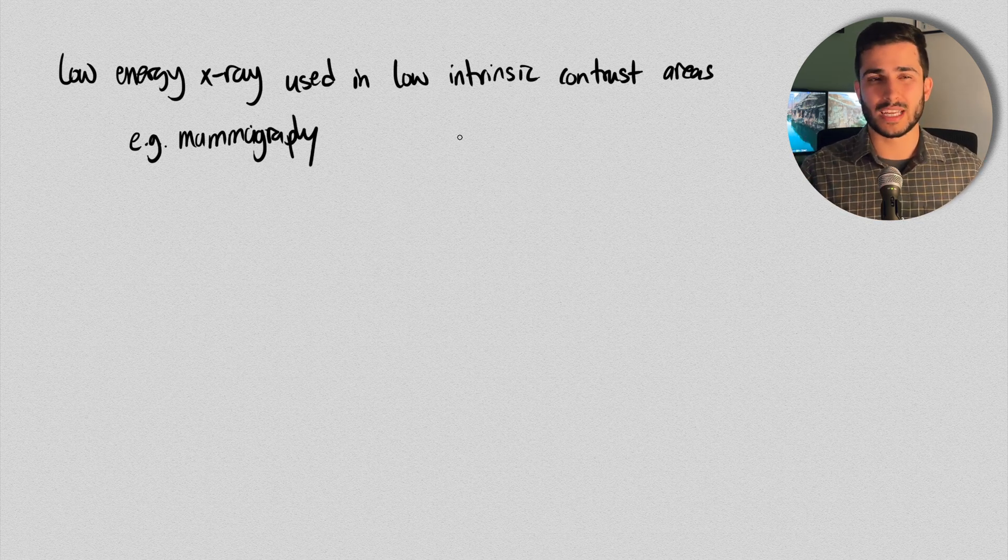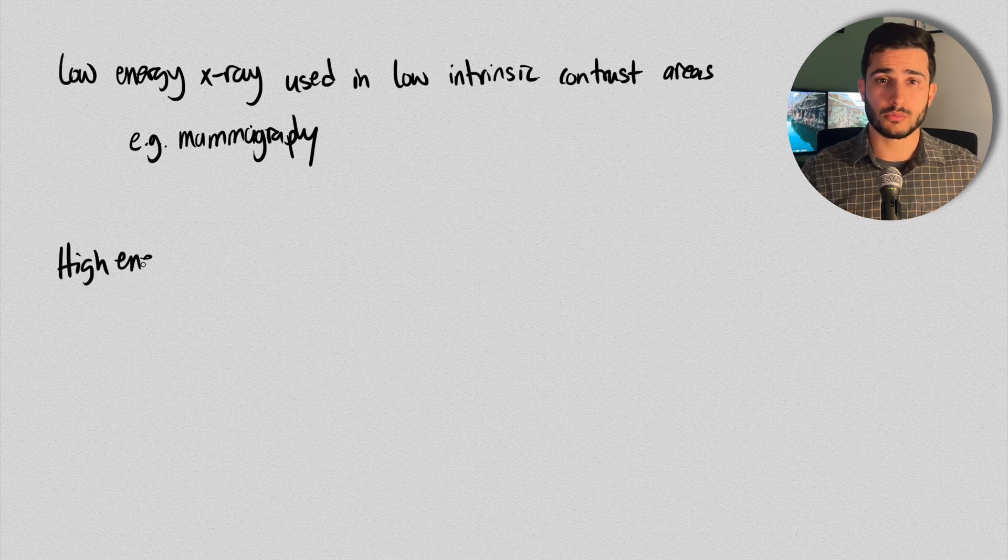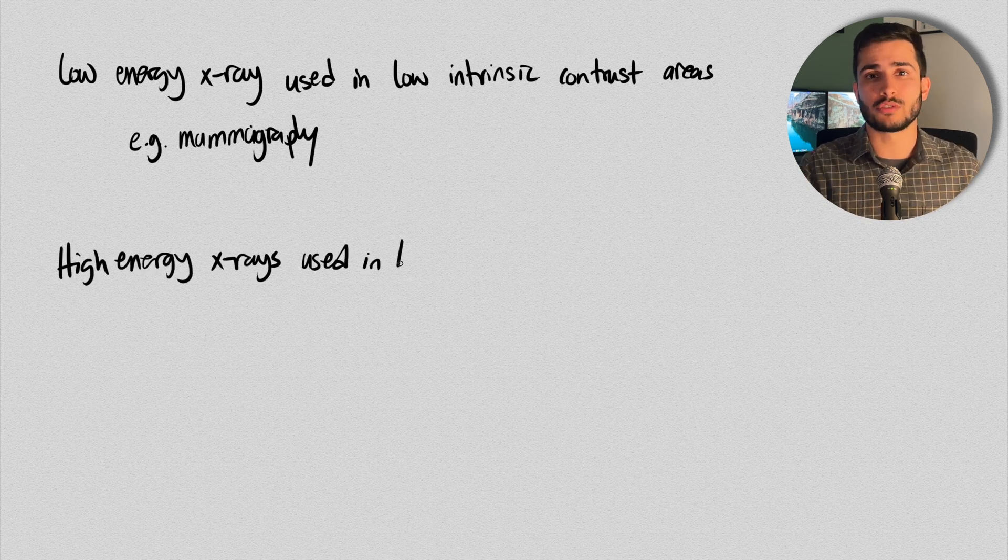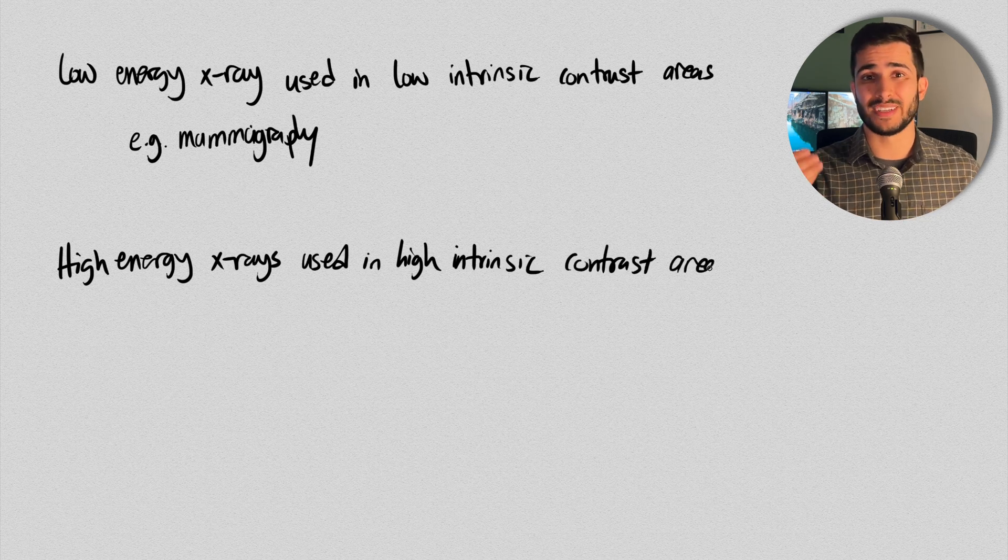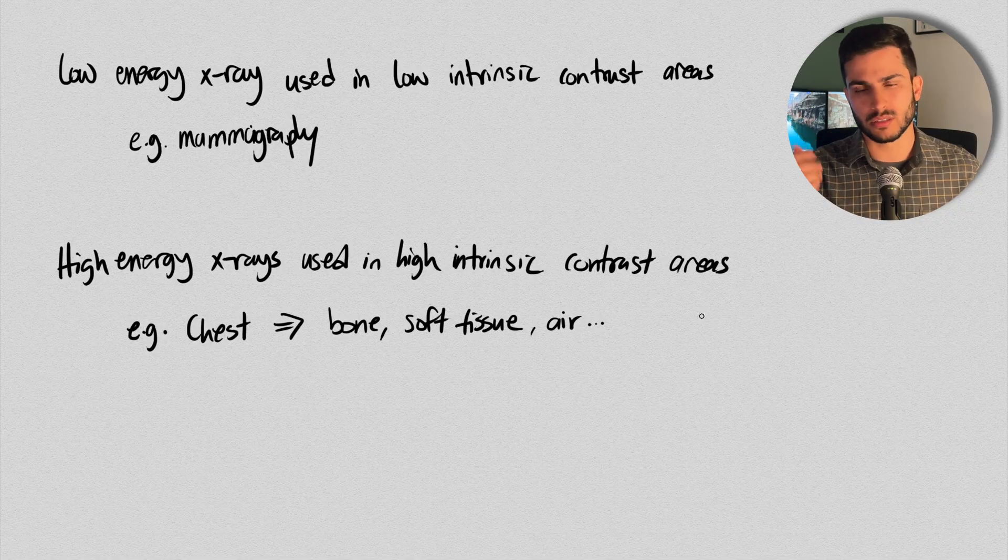As in mammography, they usually use anywhere from about 27 to about 31, 32 kVp, which is definitely on the lower end. And then on the other side of the spectrum, when we're dealing with an area of high intrinsic contrast, such as the chest, where you have bone, soft tissue and air, then that's where you want to use your higher energy X-rays, which when you think about your chest exposures, it ranges anywhere from about 100 to 125 kVp, depending on the machine.